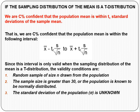Just like the z-confidence interval, we're some percent confident that the population mean is within t-confidence standard deviations of the sample mean. We start at x-bar, and go down and up some t-confidence number of standard deviations, which are s over the square root of n. So the bottom limit is x-bar minus t* times s over the square root of n, and the top limit is x-bar plus t* times s over the square root of n. The validity conditions are: random sample, sample size greater than 30 or population known to be normal, and population standard deviation unknown.